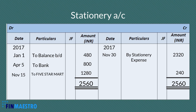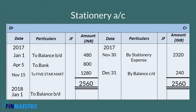Against that difference, we will write 'By Balance CD'. This is the ending balance of the stationery as on December 31st. This balance will be brought forward at the beginning of the next year. So beneath the debit side total, let's write the date as January 1st, 2018, and write 'To Balance Brought Down', Rs. 240.